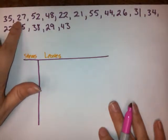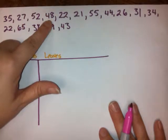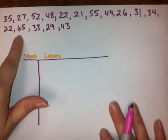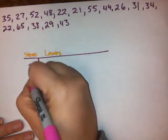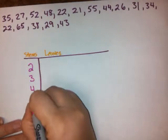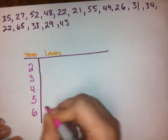I've got some 30s, some 20s, some 50s, some 40s, some 60s. So it looks like my stems are going to be 2, 3, 4, 5, and 6.